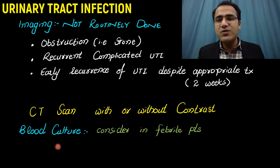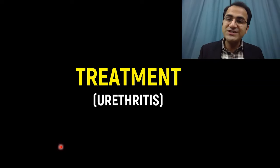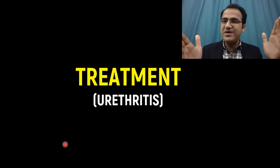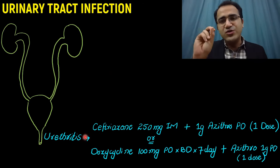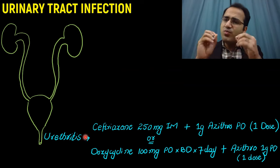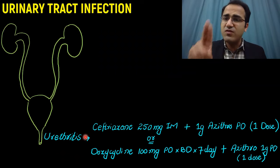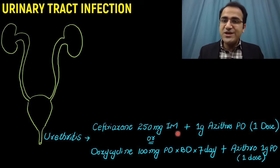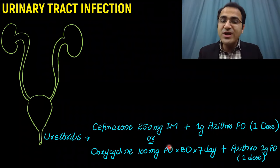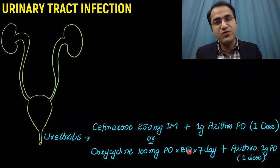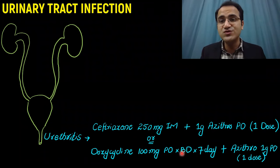Blood cultures are not routinely done — only when sepsis is suspected. Coming to treatment: for urethritis, the two most common organisms are Chlamydia and gonorrhea, so you treat both simultaneously. Give ceftriaxone 250 mg IM with azithromycin 1 g per oral as a single dose. Alternatively, doxycycline 100 mg per oral twice daily for 7 days plus azithromycin 1 g per oral as a single dose.